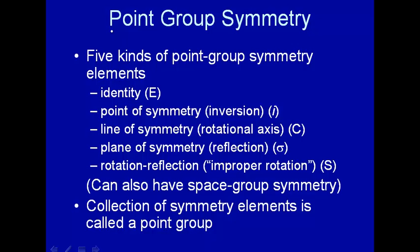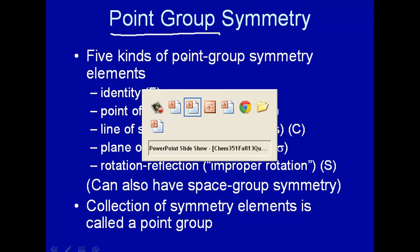What we're going to talk about are point group symmetry. So there's two general kinds of symmetry of use in chemistry. One is point group, and the other is space group.